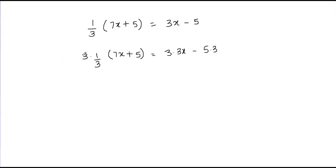Now 3 and 3 will cancel out. 3 divided by 3 is 1, and 1 times 1 is 1. So we have 7x plus 5.